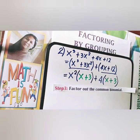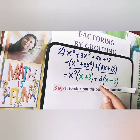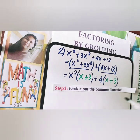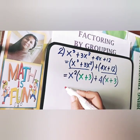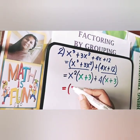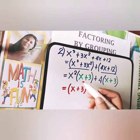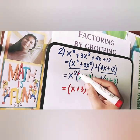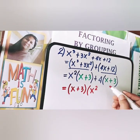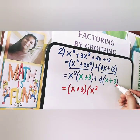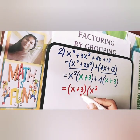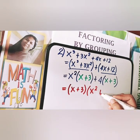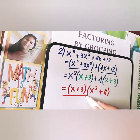Step 3: factor out the common binomial. The common binomial, shown in green, is x plus 3 — they are the same in both groups. Factoring out x plus 3: x squared times (x plus 3) divided by (x plus 3) gives x squared, and 4 times (x plus 3) divided by (x plus 3) gives 4. So our final answer is (x plus 3)(x squared plus 4).